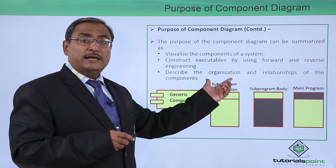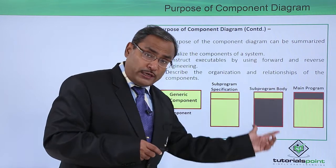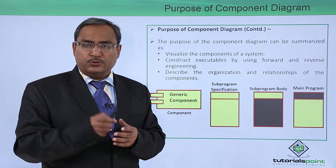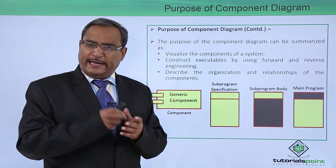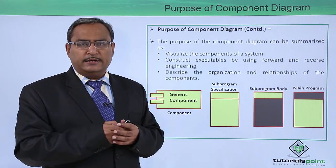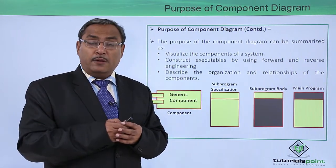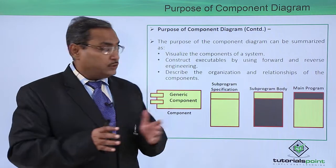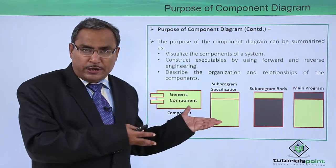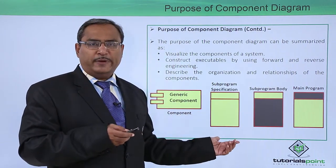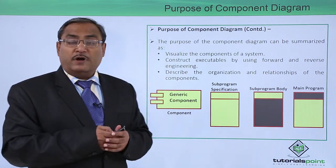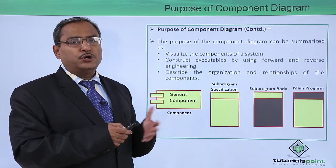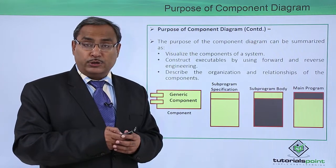There is a sub-program specification and a sub-program body. In the specification, only the prototypes are written — just like header files, which are text files containing multiple prototypes of different methods. Library files contain the actual method bodies. Similarly here, the specification has only prototype declarations while the sub-program body has the respective function implementations. These are the component diagram symbols used for making the component diagram of one executable application.